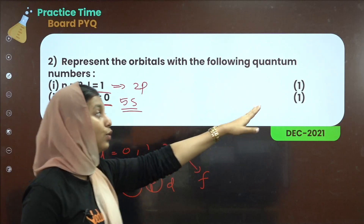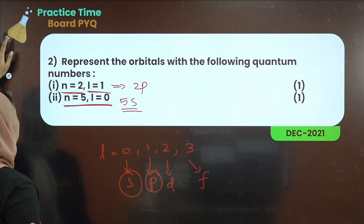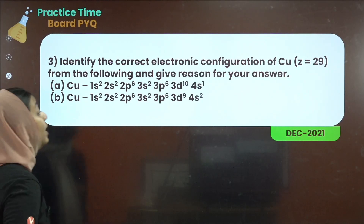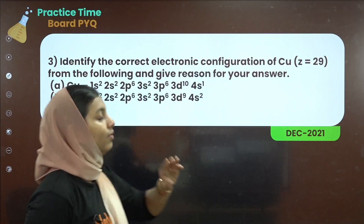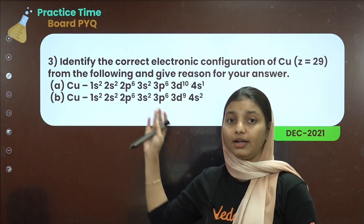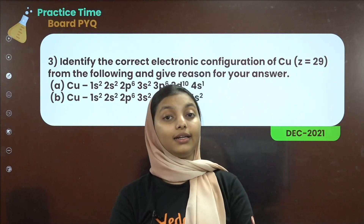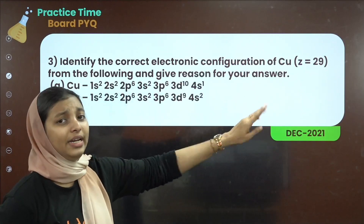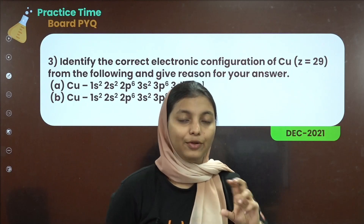It's easy marks. Next question: identify the correct electronic configuration of copper, atomic number 29, from the given options, and give reasons for your answer. Copper and chromium show anomalous behaviour — that's the exception.